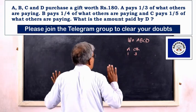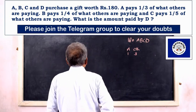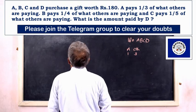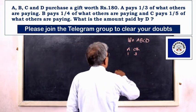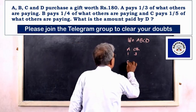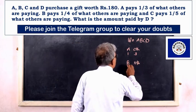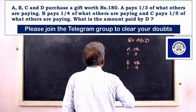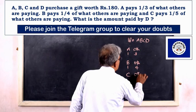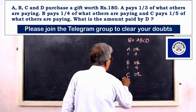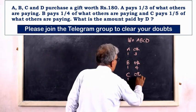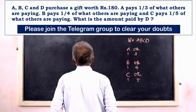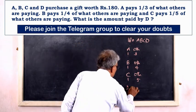B pays one-fourth of what others are paying. And C pays one-fifth of what others are paying. The remaining amount is D's share.